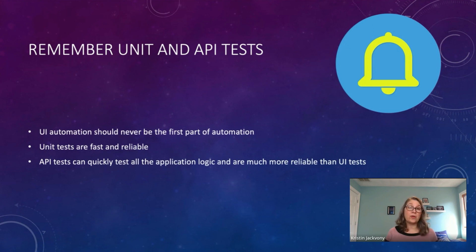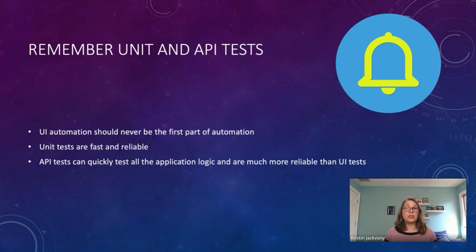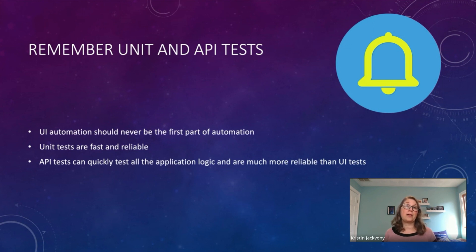That's true for web, and it's even more true for mobile. Unit tests are fast and reliable, and they run without having to interact with the device. API tests can quickly test all the application logic and are much more reliable than UI tests. Between your unit and API tests, you can find out a lot about your mobile application without even having to connect to a device.